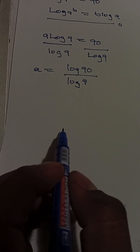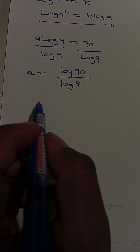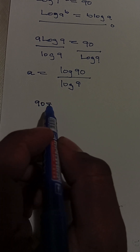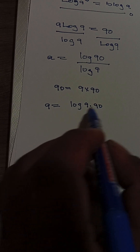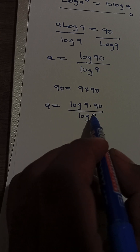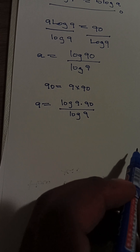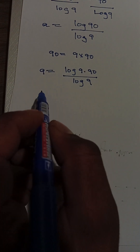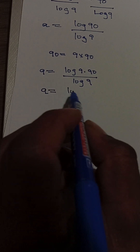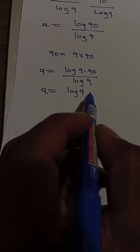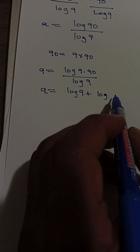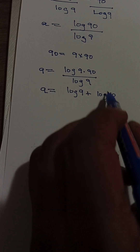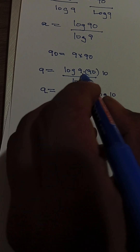Let's go further. Notice that 90 = 9 × 10. So a equals log(9 × 10) divided by log(9). Using the product rule of logarithms — log(mn) = log(m) + log(n) — we can expand log(90) as log(9) + log(10). Note: it's 9 times 10, not just 90.